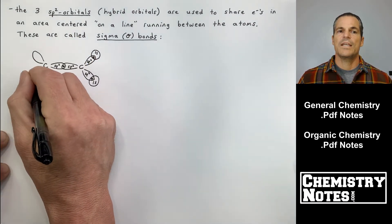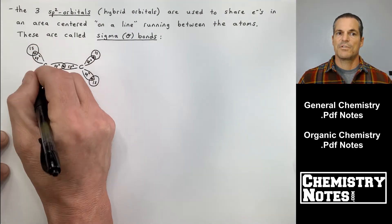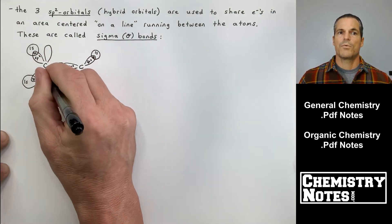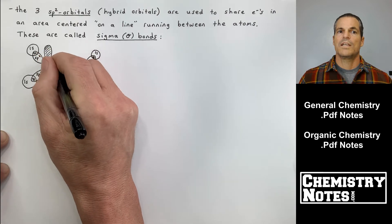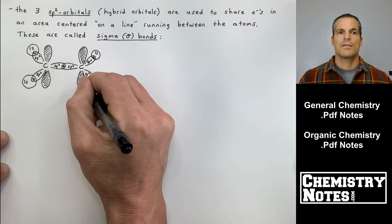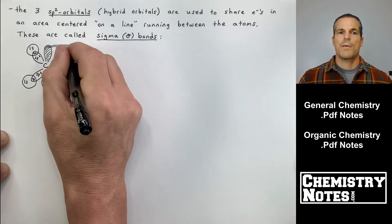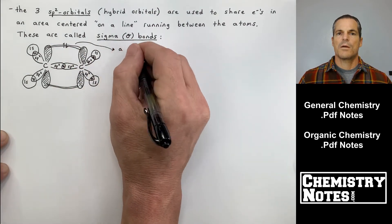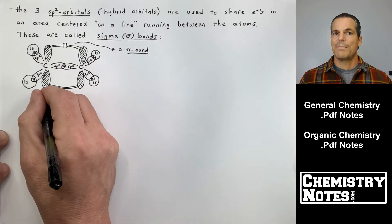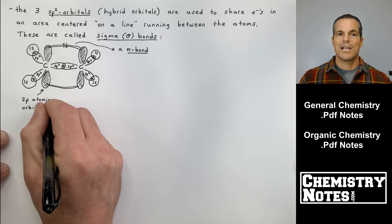Each carbon has three sp2 orbitals, and on the outside we have our hydrogens, each bonding to a carbon through a 1s atomic orbital interacting with an sp2 hybrid orbital, with electrons in between. Now, the shaded ones — remember this is a carbon-carbon double bond. A carbon-carbon double bond is one sigma bond and one pi bond. So what is a pi bond? I'm going to define it in just a second.